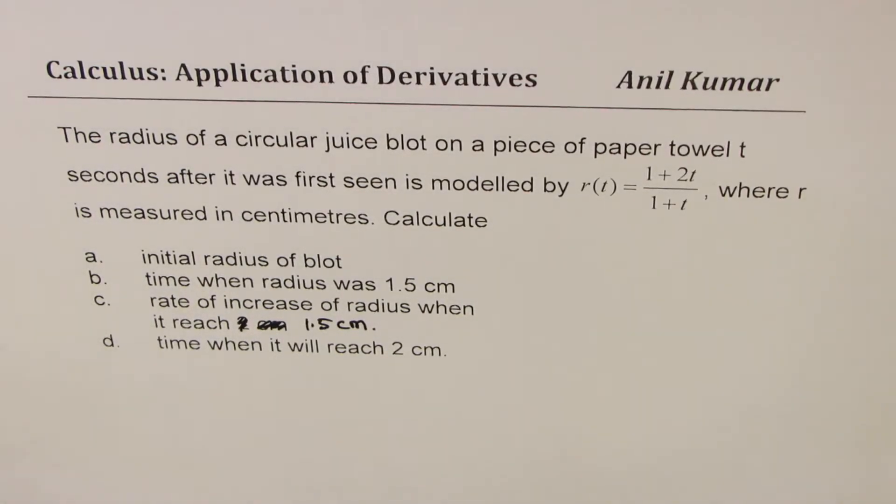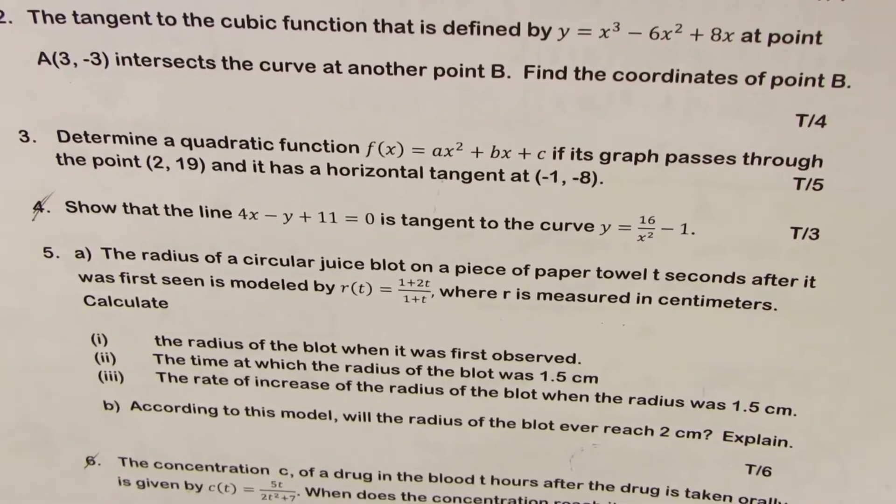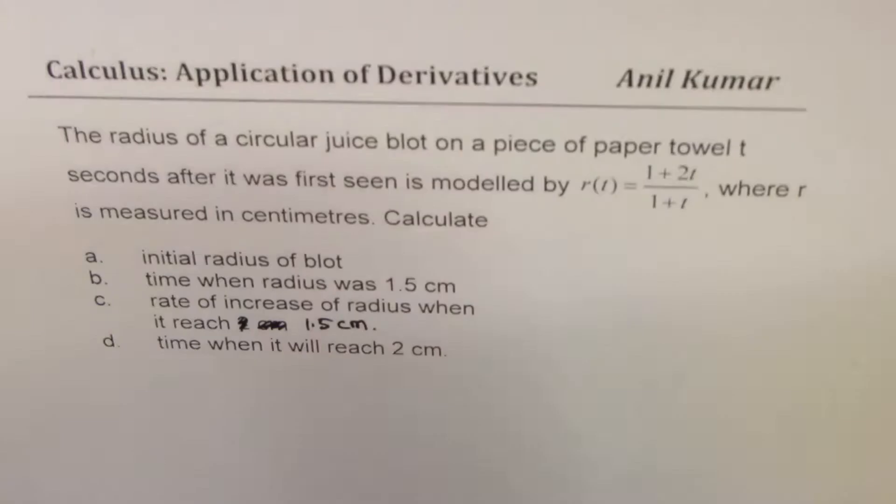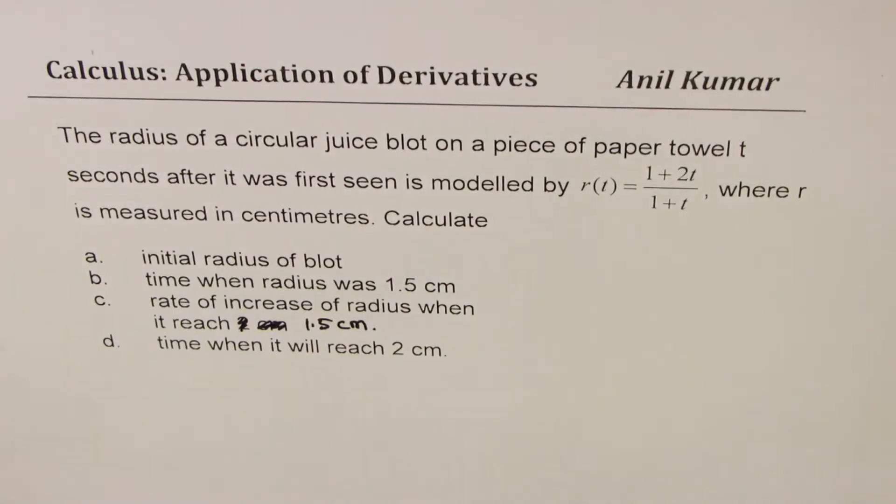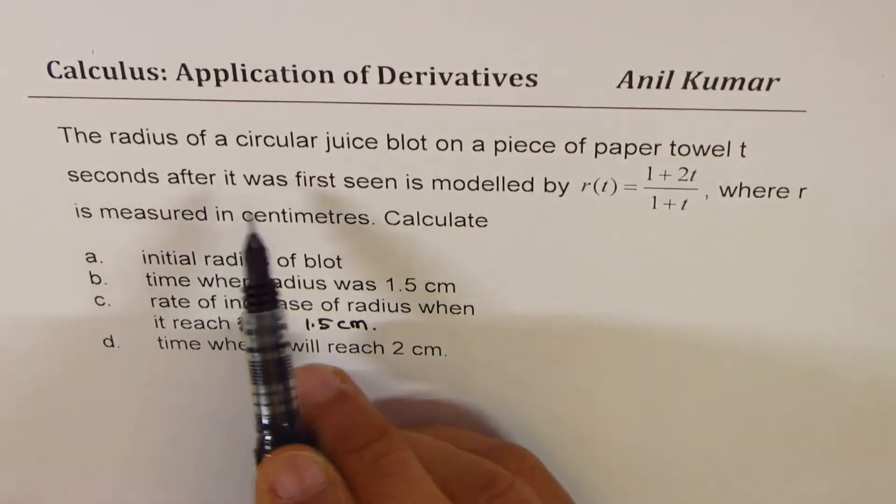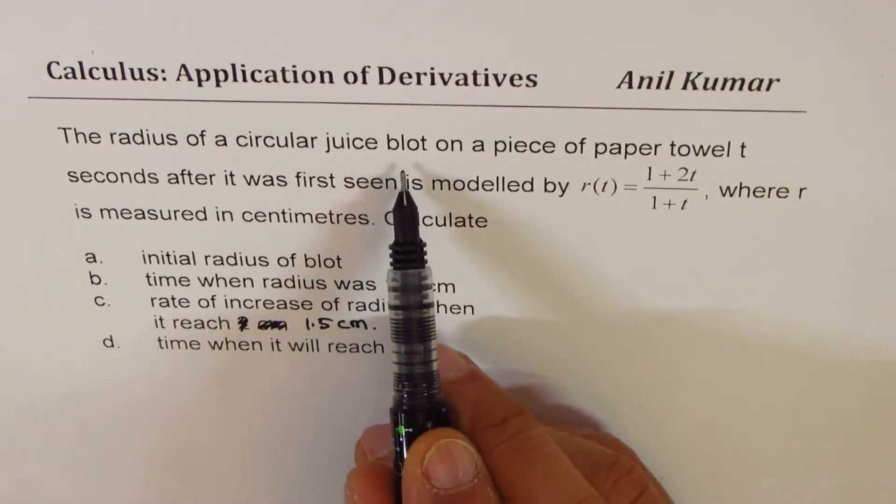I'm Anil Kumar sharing with you a question from a previous test paper. Here is question number five which we are going to discuss now. The question is: the radius of a circular juice blot on a piece of